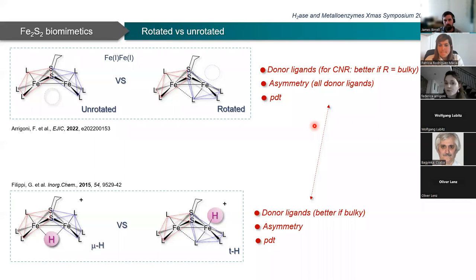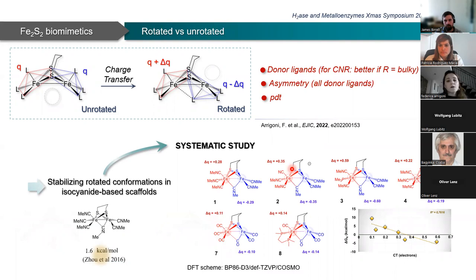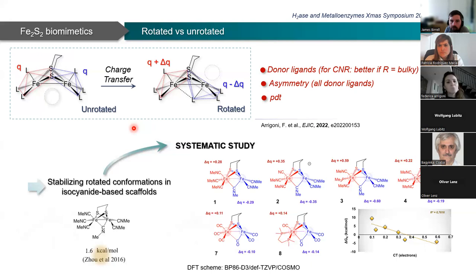There is another interesting fact—already noticed by Hall—that rotation is accompanied by an intramolecular charge transfer, in particular from the unit that does not rotate to the other one, so the blue rotated unit increases its negative charge. We also found that this charge transfer nicely correlates with the free energy for rotation, which means it is the quantity we need to maximize if we want a very stable rotated form in these systems.